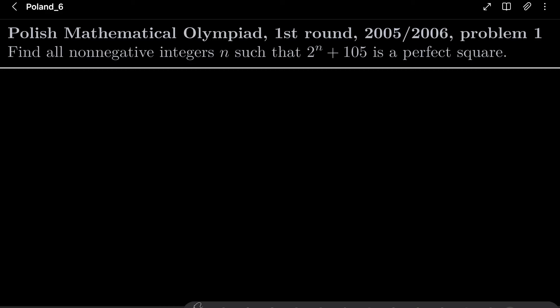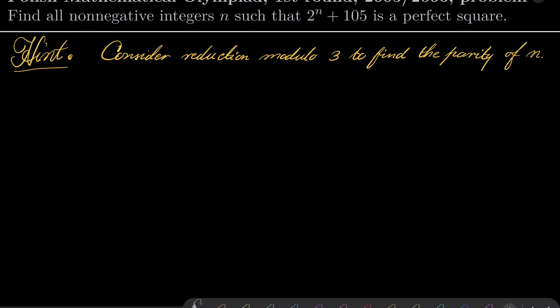It's a rather standard problem, here is my hint. Consider reduction modulo 3 to find the parity of n, and then write that our number equals k squared, for example, and try to do the factorization of 105. So give this problem a try.